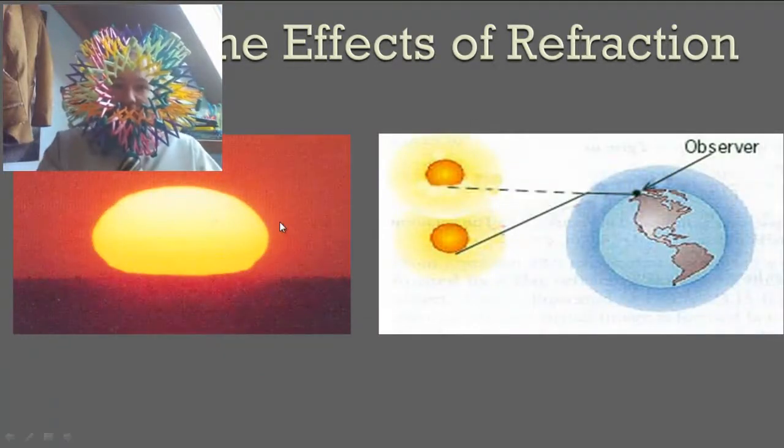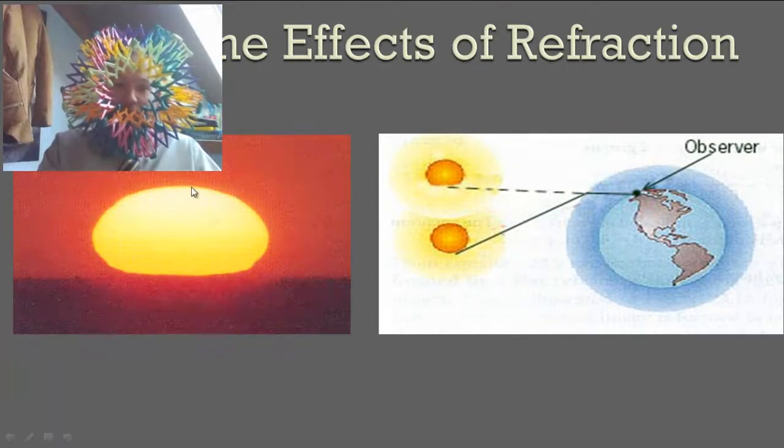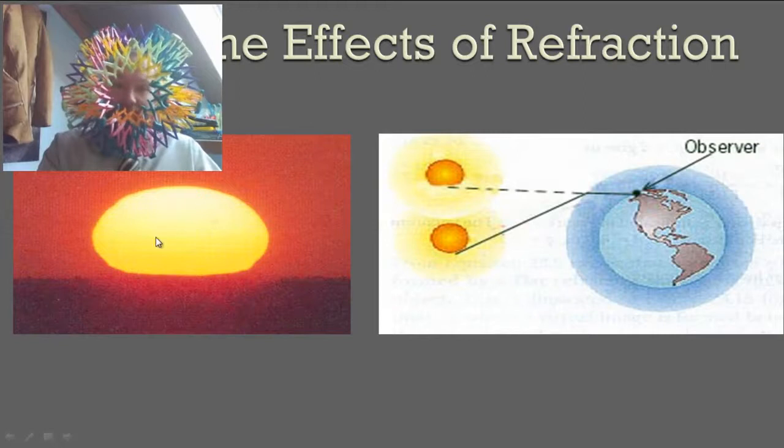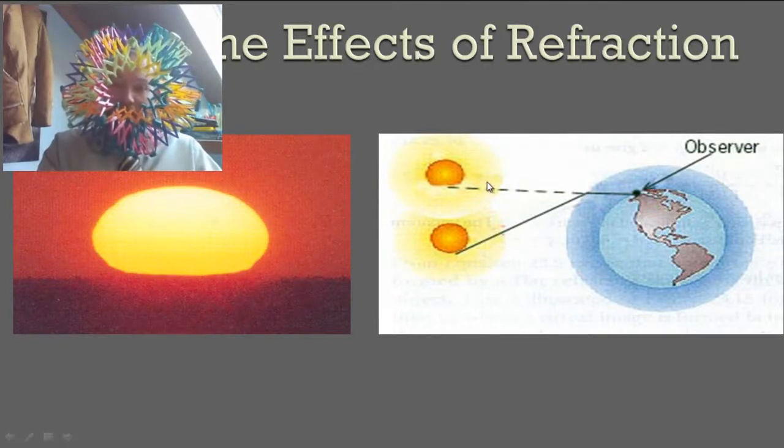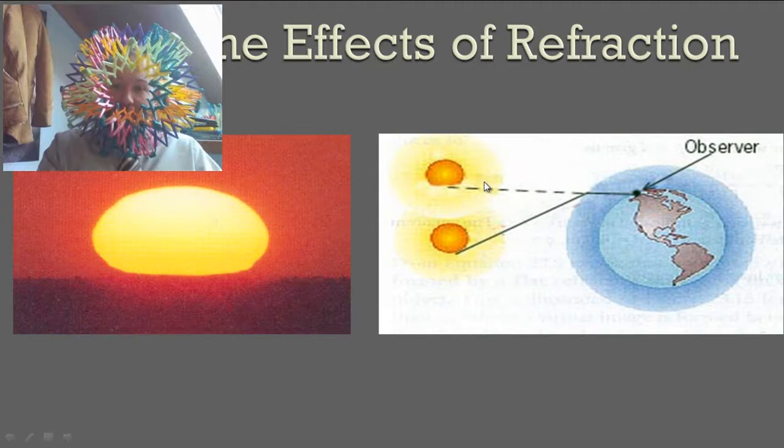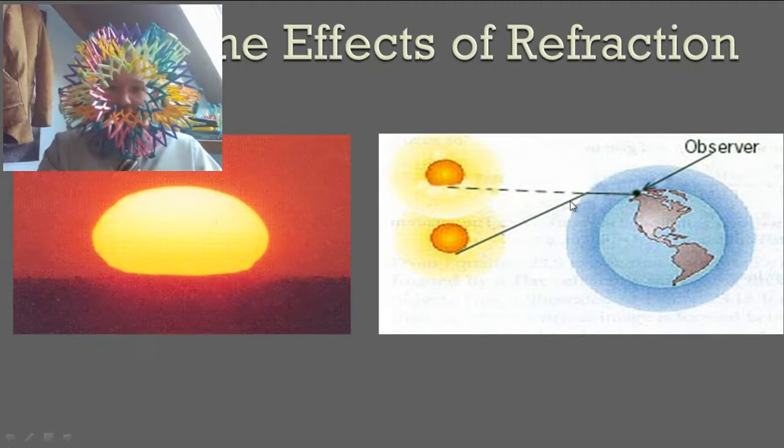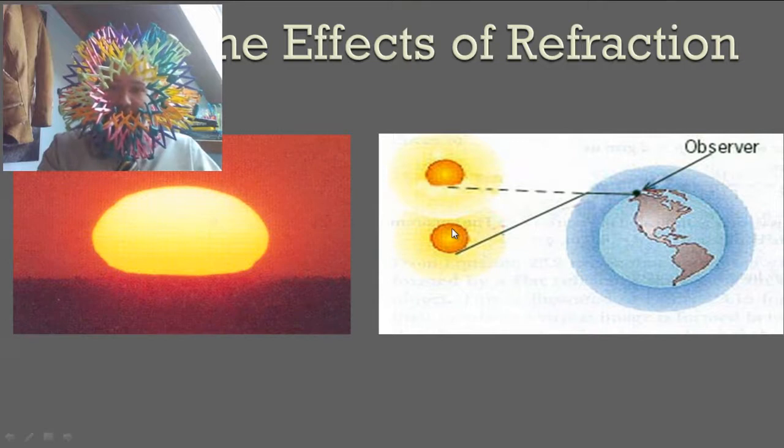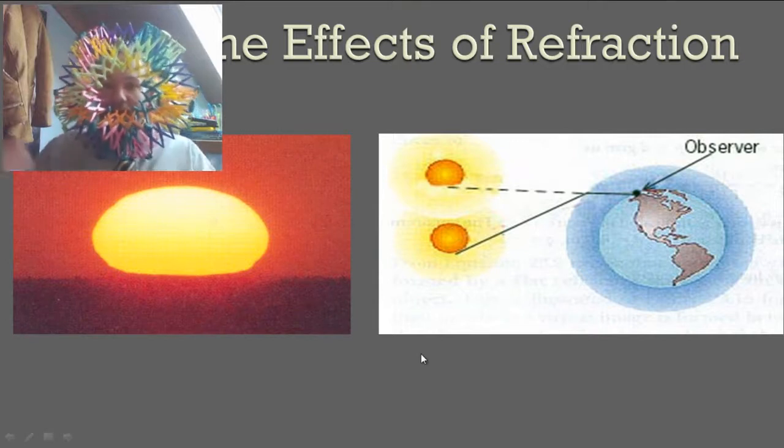Anytime you see the sun setting, see how it looks all globular and oval-like, but we know the sun is pretty spherical. It looks like this because of the refraction. Same thing when the sunlight enters the Earth's atmosphere, it's also refracted. So we see the sun here, but it's actually over here. Kind of cool.